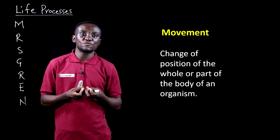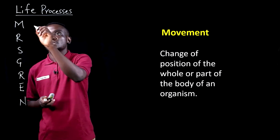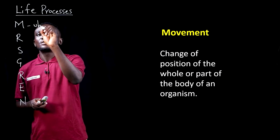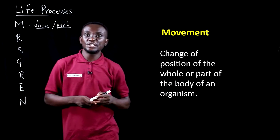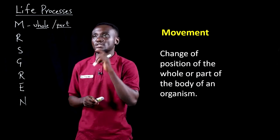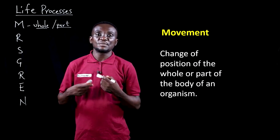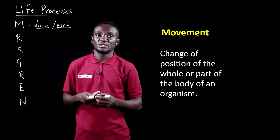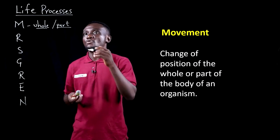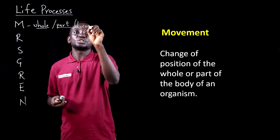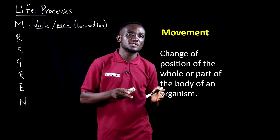We saw that M is for movement. We define movement as a change of position of either the whole or part of the body of an organism — so there's a change in position of the whole or part of the body. The assignment from the previous lesson asked for another name for movement, which largely has to do with when the organism moves its whole body from one place to another, and we refer to that as locomotion.